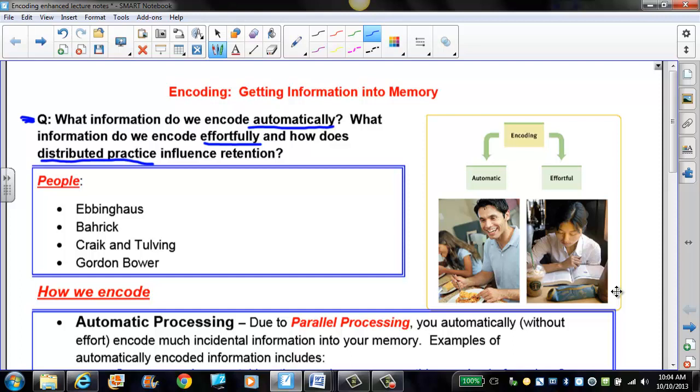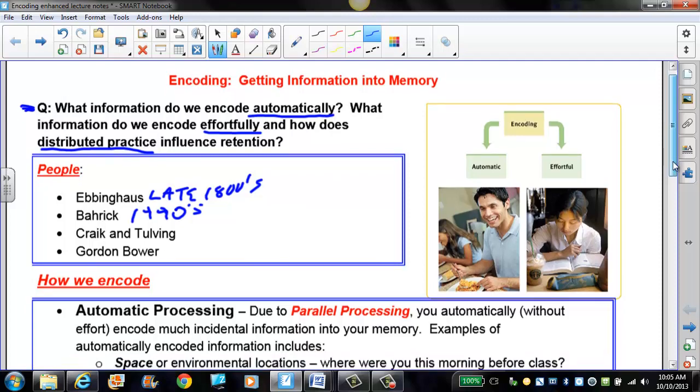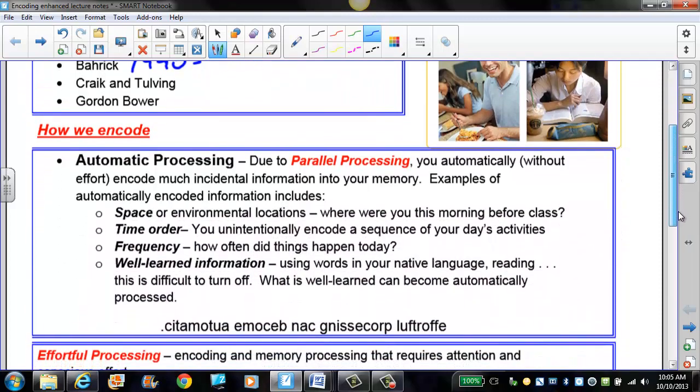There's a couple people that are going to be important in this section. They come up on the AP test quite frequently. Ebbinghaus, which was the late 1800s. We've got Baric in the 1990s. We've got Craik and Tulving and Gordon Bower, which we'll talk about in a different section. They're going to talk a little bit more about visual and acoustic encoding.